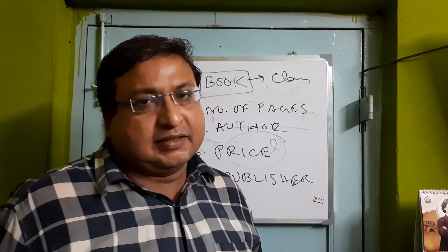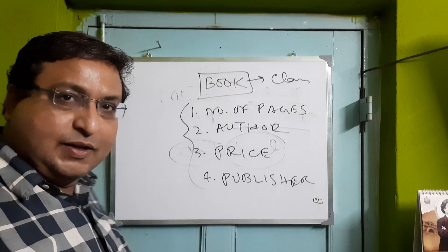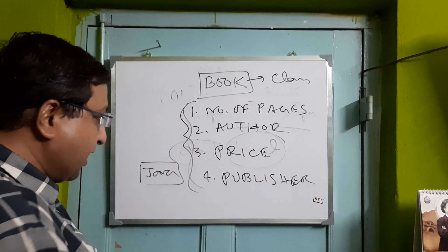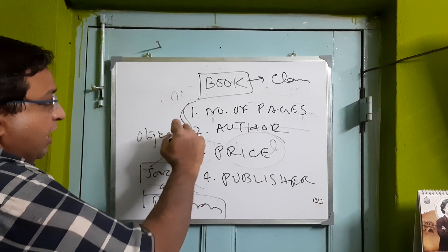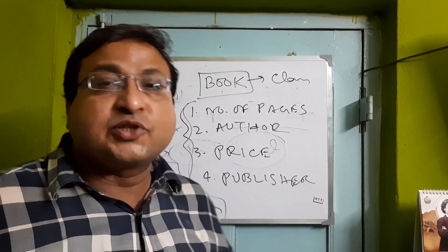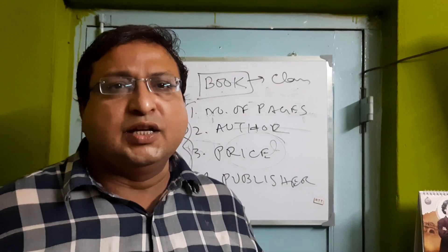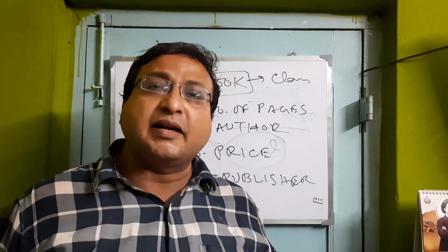Your Java book written by someone, or any other book written by someone else — they are objects of the class 'book'. A specific book, like a Java book, possesses all of these characteristics. So this is what we call an object, and it belongs to the class. According to the definition: a class is an entity which possesses some common characteristics, and an object is an instance of a class.